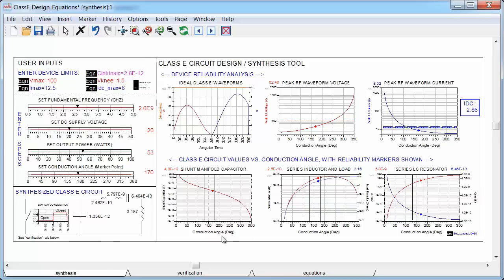And on the bottom, the circuit values are plotted entirely versus conduction angle. The valid range for reliable operation occurs for conduction angles between the markers, and there's also a marker that shows the particular conduction angle that I've selected.